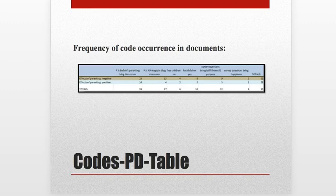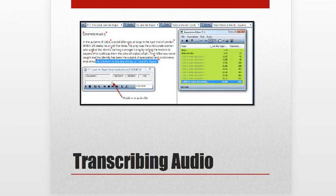There are also frequency-of-code-occurrence options in the different types of software, pulling some quantitative numbers for how often codes occur in different documents or across the whole project. And most of them come with a transcribing option, although with some you have to pay a little extra for this feature. It allows you to slow down, speed up, and stop transcribing audio while typing it up, and most are set up so you can run the transcription program from your keyboard so your hands never have to leave it.